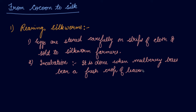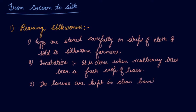The larvae, called caterpillars or silkworms, eat day and night and increase their size enormously. They keep on eating day and night and increase their size very fast. The larvae are kept in clean bamboo trays along with freshly chopped mulberry leaves. After 20–25 days, the caterpillars are kept in clean bamboo trays along with freshly chopped mulberry leaves.